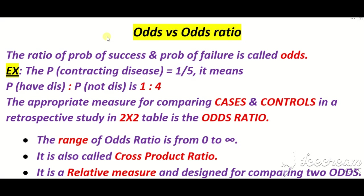This is a research-based topic — that is odds versus odds ratio. The ratio of probability of success to the probability of failure is called odds. The probability of success or probability of failure کے in-between جو ratio ہوتی ہے اس کو ہم odds کے نام سے جانتے ہیں.